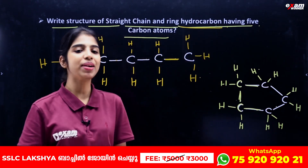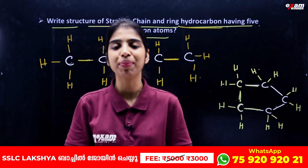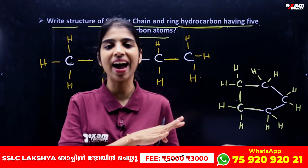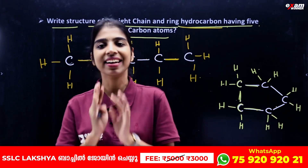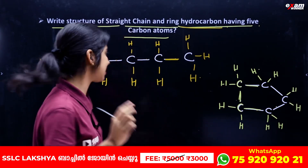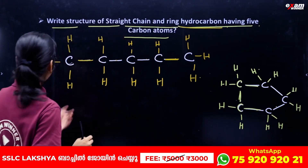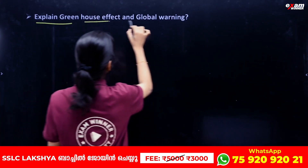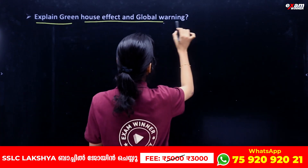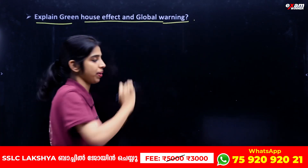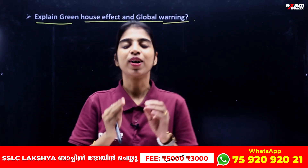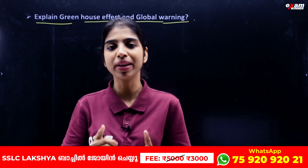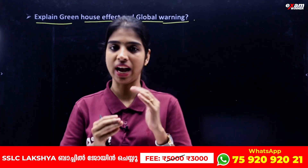This is how we use the 5 carbon items with the straight chain structure. The next question is: explain the greenhouse effect and global warming.